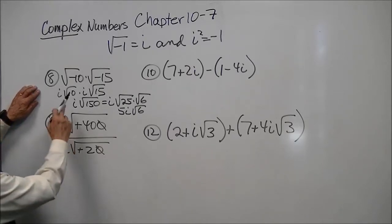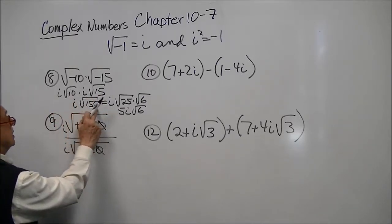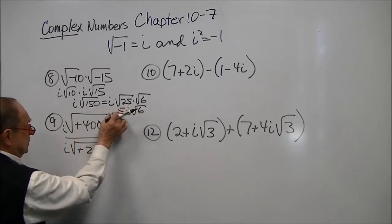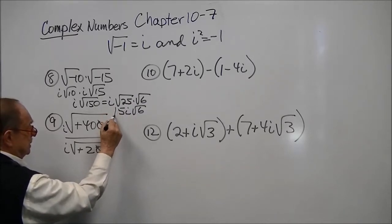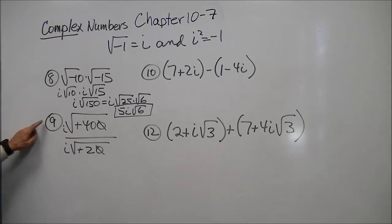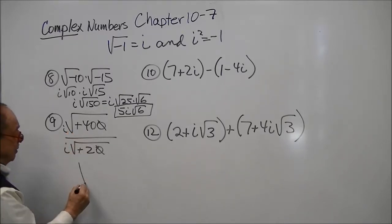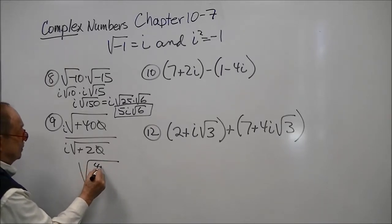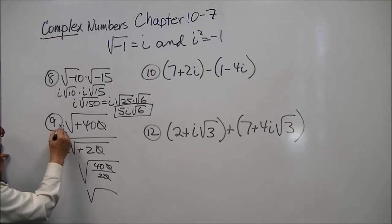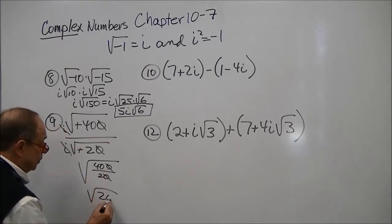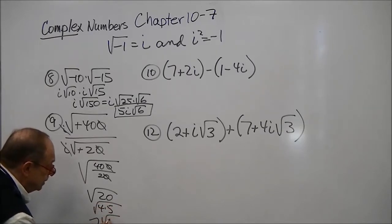In number 8, we pull out the i's and get √10 times √15 = √150, which factors into 25 times 6. Pulling out √25 as 5, there's our answer. In number 9, if we pull out the i's, these become positive and we can put it all under one radical: 400 divided by 20. We cancel that out and the i's cancel as well, giving us √20. The square root of 20 is √4 times √5, so this would be 2√5.